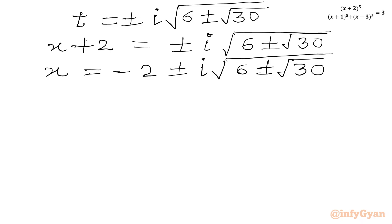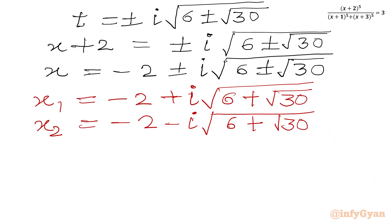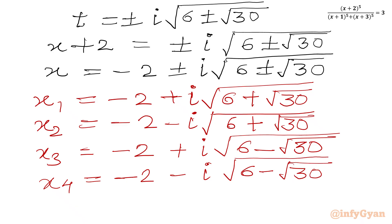So we have four complex solutions: x₁ = -2 + i√(6+√30), x₂ = -2 - i√(6+√30), x₃ = -2 + i√(6-√30), x₄ = -2 - i√(6-√30). These are all four complex solutions. I hope you liked this video. Thank you very much for watching. Bye-bye till the next video. Good luck.